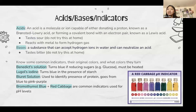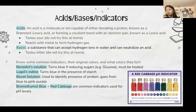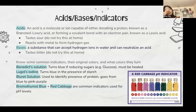For acids, bases, and indicators, you should know a basic definition and how to use pH indicators. In-person contests may give you a solution and litmus paper and ask you to approximate the pH using a reference sheet. Know Benedict's solution, Lugol's iodine, Biuret solution, bromothymol blue, and red cabbage — know what each one indicates. pH can range between 0 and 14; the higher the value, the more basic the solution. Water is usually around 7.